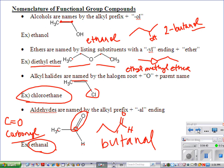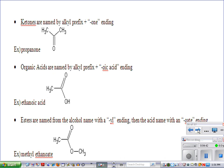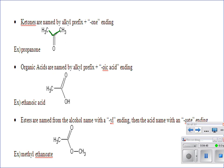For ketones, the carbonyl group is inside the chain — not terminal. Count the longest chain: three carbons is propane. Since it's a ketone, drop the -e and add -one: propanone. If you have a longer chain, you must indicate with a number where the carbonyl double bond is. For example, 2-butanone.